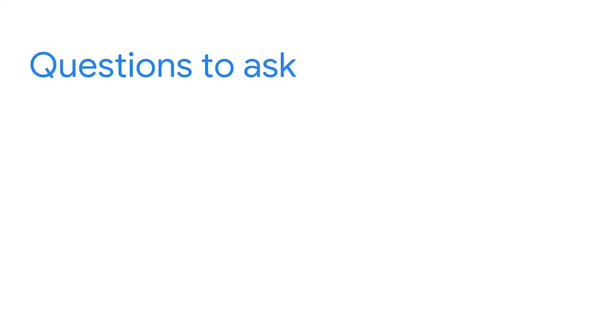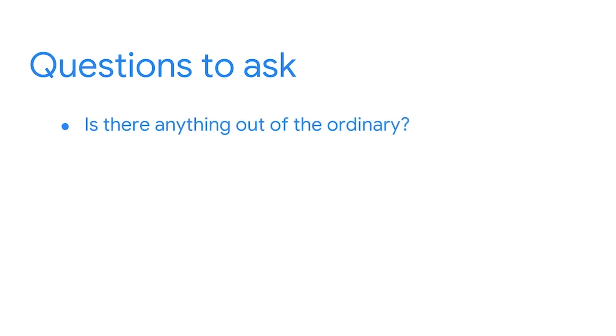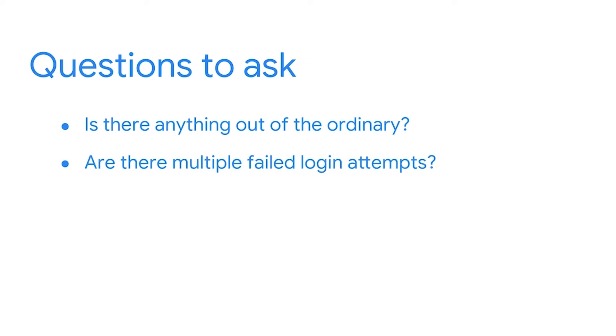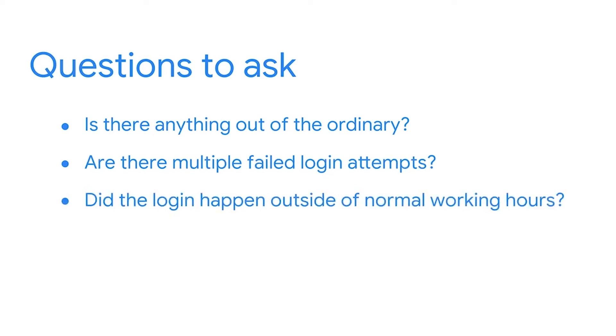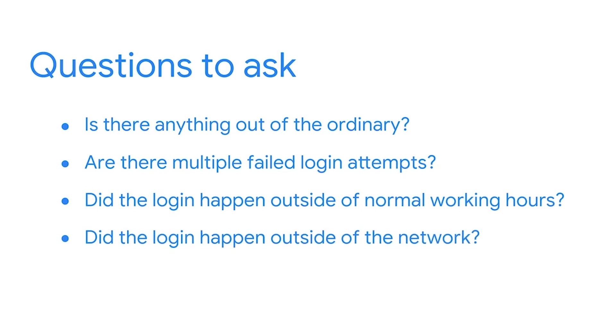As an analyst, you'll want to ensure that you complete a thorough analysis so that you have enough information to make an informed decision about your findings. For example, say that you receive an alert for a failed user login attempt. You'll need to add context to your investigation to determine if it's malicious. You can do so by asking questions: Is there anything out of the ordinary associated with this alert? Are there multiple failed login attempts? Did the login happen outside of normal working hours? Did the login happen outside of the network? These questions paint a picture around the incident.